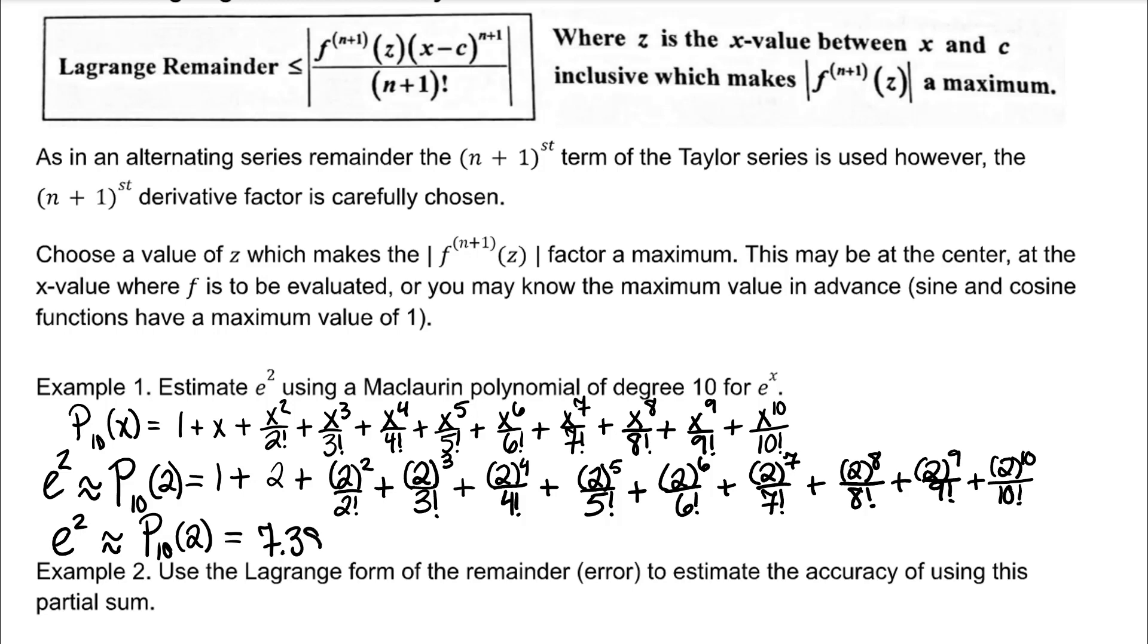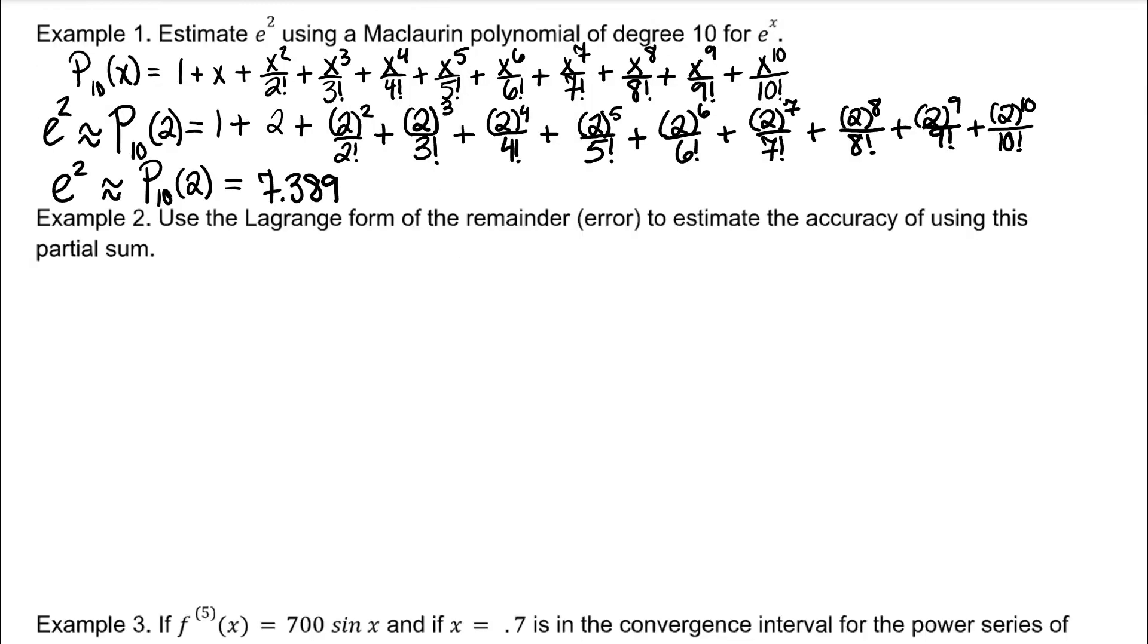For example 2, we're going to use the Lagrange form of the remainder, also known as error, to estimate the accuracy of using this partial sum. Partial sum meaning the 10th degree polynomial we used in example 1. Let's figure out what we know first. n, the degree of the polynomial, is 10. c, the center of our polynomial, is 0. x, the value we're attempting to approximate, is 2.